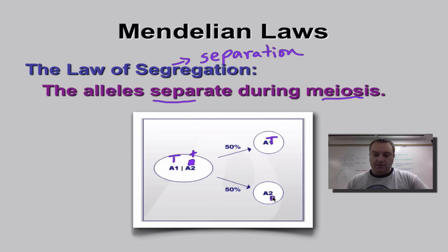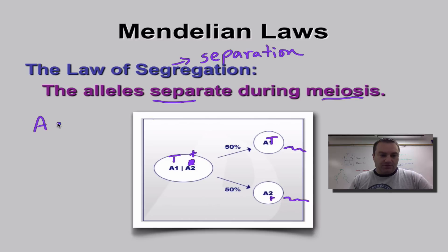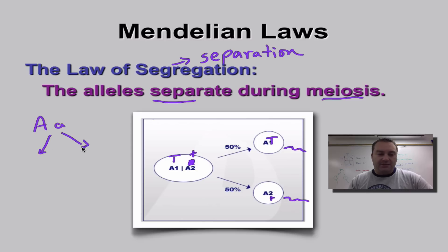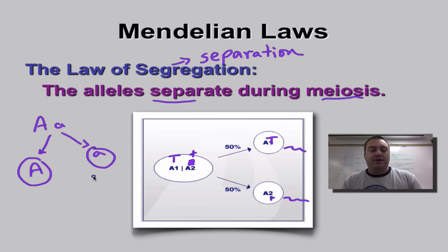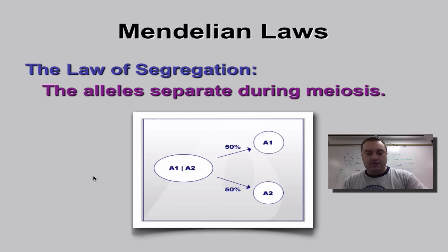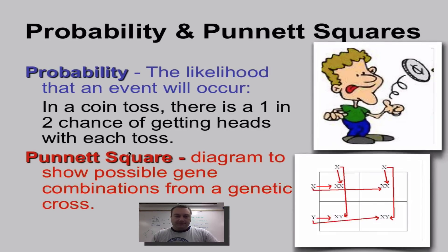We'll make these sperm cells. Again, we have a heterozygous individual — there's the dominant allele, there's the recessive allele. When this female makes egg cells, half of them are going to get a big A and the other half are going to get a little a. That's all there is to the Law of Segregation, and this is fundamental when doing Punnett square problems because it tells you which letters to put on the outside of the Punnett square.